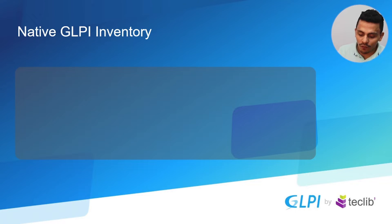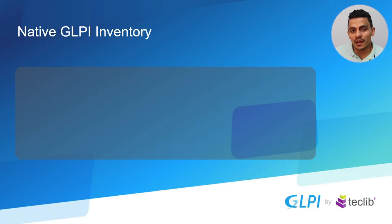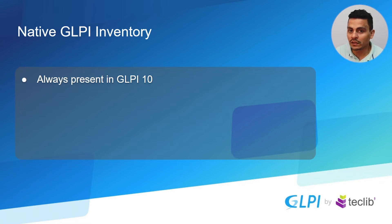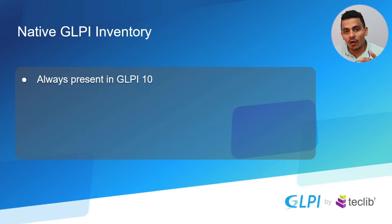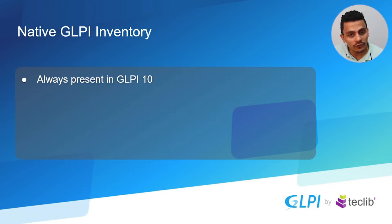I believe I can give you some tips on when to decide and when to use each of these features. First of all, we have the native GLPI Inventory, which is a tool that is inside every GLPI 10 installation — it's always present in GLPI 10. You can never take it off and you can use it for manual insertion of data, or in an automatic way where you can insert information via JSON or XML, and also use it with the GLPI agent.